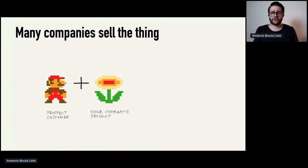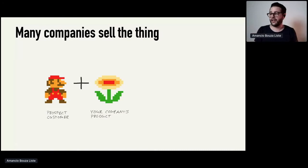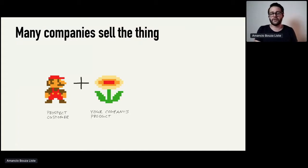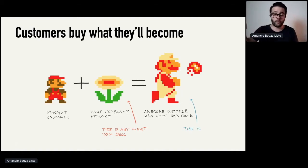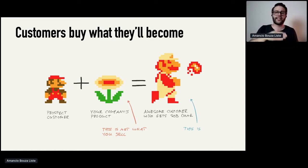That's what most companies actually do — they try to sell the thing. If you know the computer game Super Mario and you find a fire flower, why do you catch it? It's just 1,000 points, but it doesn't help you save the princess. And that's actually what customers buy. They don't buy the thing — they buy what they become. With the fire flower, you become Fire Super Mario. That means you can kill enemies without risking your life, making it easier to save the princess in the end.